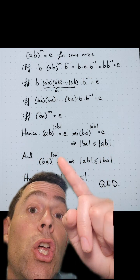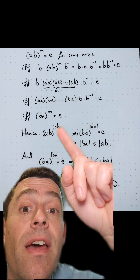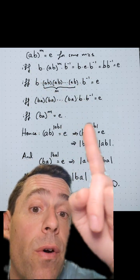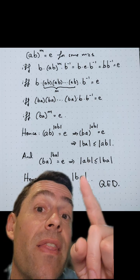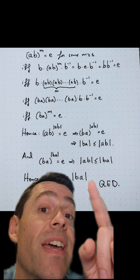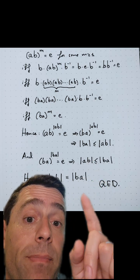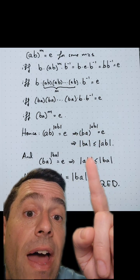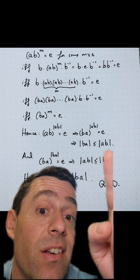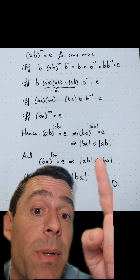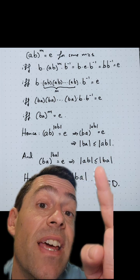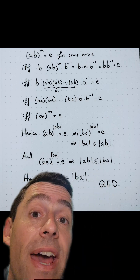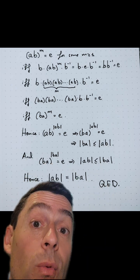Similarly, B times A to its order is E, and therefore by the equivalence in the opposite direction, that tells me that the order, doing the same thing I did here, that the order of A times B is less or equal to the order of B times A. And now I have both inequalities: that the order of B times A is less or equal to the order of A times B, and the order of A times B is less or equal to the order of B times A, and therefore they have to be exactly the same, which is what I wanted to prove.